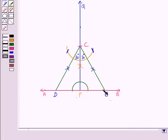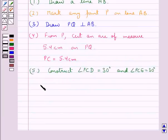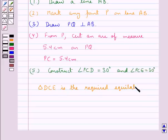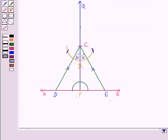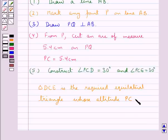So this triangle DCE is the required equilateral triangle whose altitude PC is equal to 5.4 centimeters.